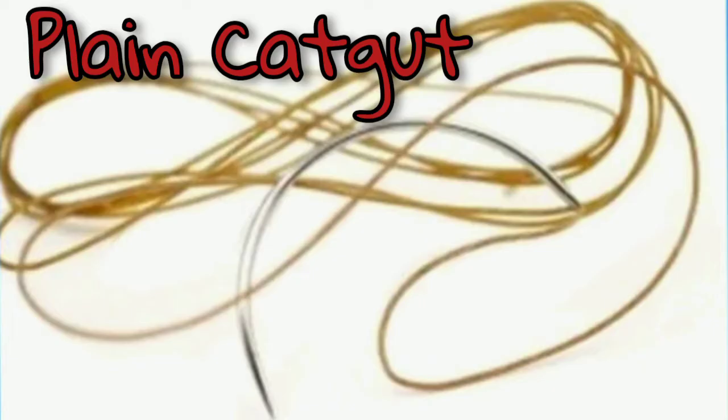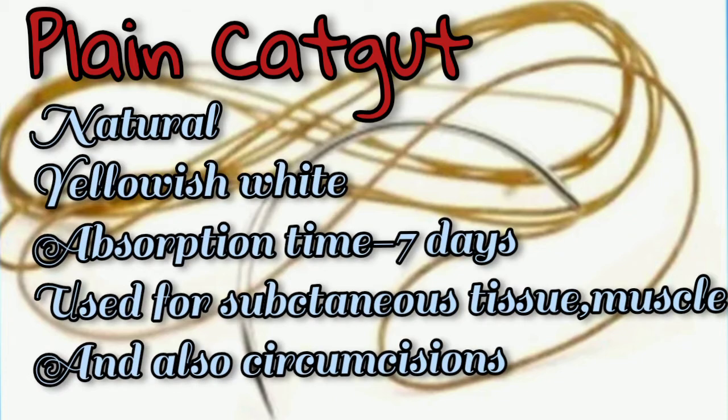Plain catgut suture material is natural, yellowish-white in color. Absorption time is about seven days. It is used for subcutaneous tissue, muscles, and also used in circumcisions.